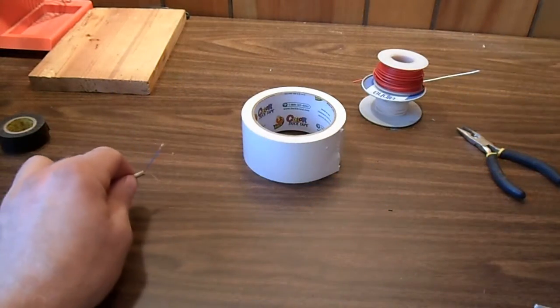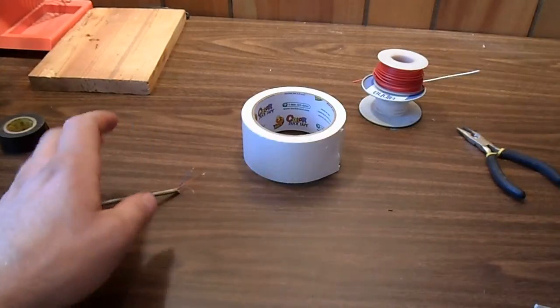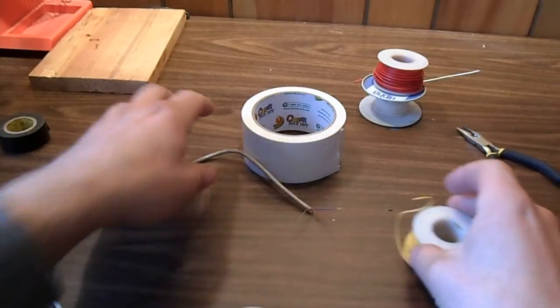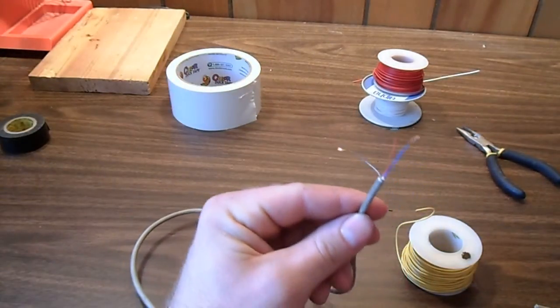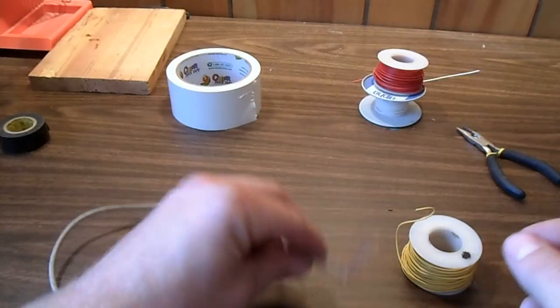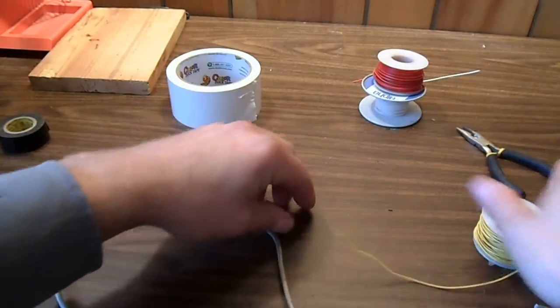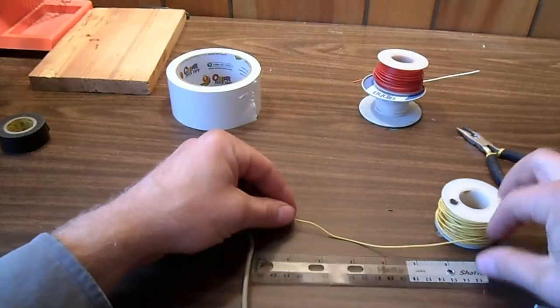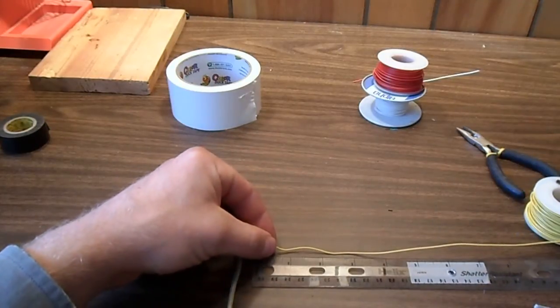Now we're going to attach the hookup wire to these wires so we can plug it into a breadboard easier. You need about six inches of each color.